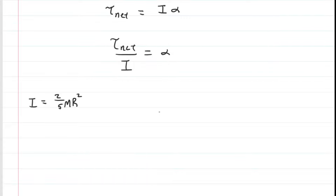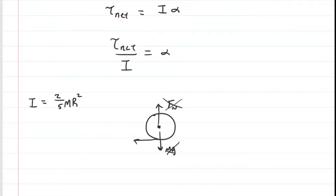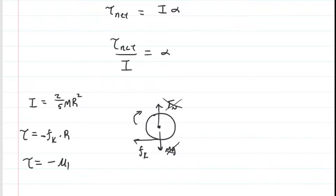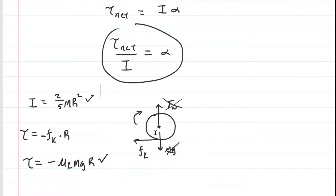As for the net torque, looking at the free body diagram again: the gravitational force Mg and the normal force both pass through the rotational axis, so they produce zero torque. However, the kinetic frictional force does not pass through the axis of rotation, so it does produce torque. The torque from kinetic friction is the kinetic friction multiplied by the distance to the axis of rotation — essentially the radius of the ball. Since kinetic friction causes clockwise rotation, that torque has a negative sign. Additionally, the kinetic frictional force equals mu-k times mg.